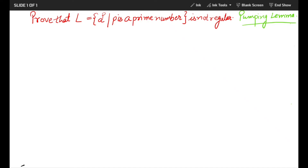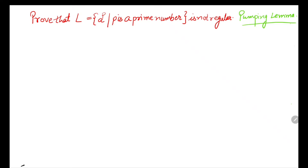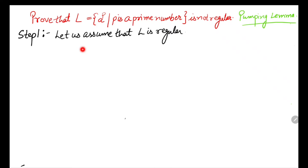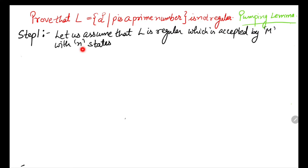We will consider a^p as a^n which we have already solved. Following the pumping lemma, Step 1: let us assume that the given language L is regular, which is accepted by machine M with n number of states. This is the fixed step we follow in every example.